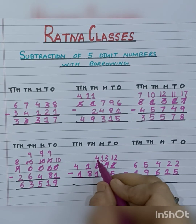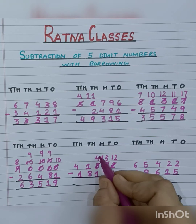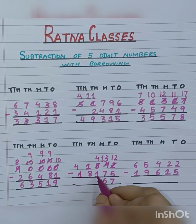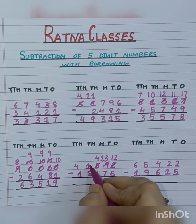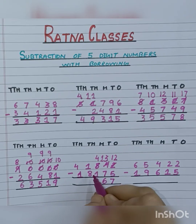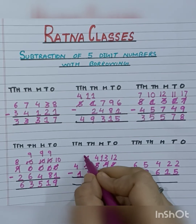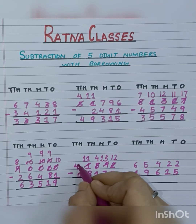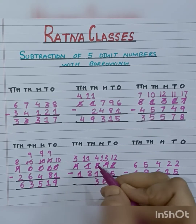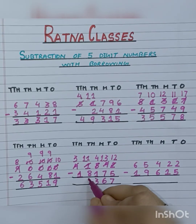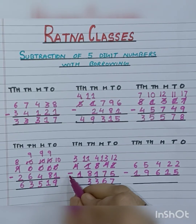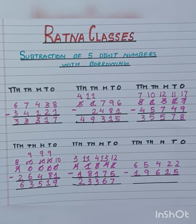Now here is 1 minus 8 — we can't subtract 8 from 1, so 1 will become 11, borrowing 1 from 4, and 4 will become 3. Now 11 minus 8 is 3. And 3 minus 1 is 2. So our answer is 23,367.